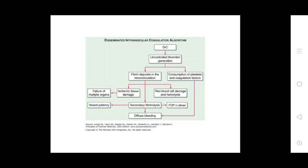Disseminated intravascular coagulation involves uncontrolled thrombin generation, fibrin deposit in microcirculation, and consumption of platelets and coagulation factors. This leads to failure of multiple organs, systemic tissue and red blood cell damage causing hemolysis. Fibrin deposition in microvessels causes secondary fibrinolysis, resulting in vessel patency and FDP or D-dimer formation, then diffuse bleeding. The main pathophysiology is uncontrolled thrombin generation, fibrin deposit in the microcirculation, and consumption of platelets and coagulation factors.